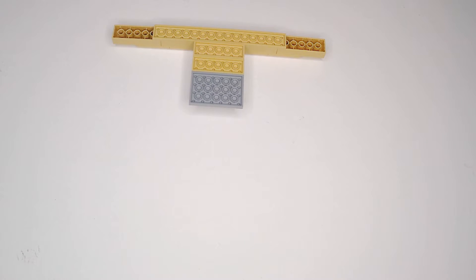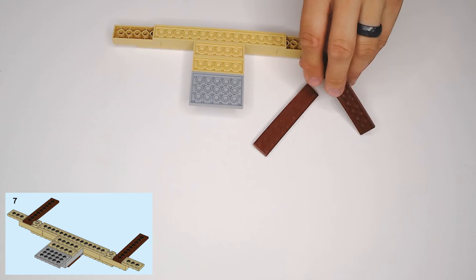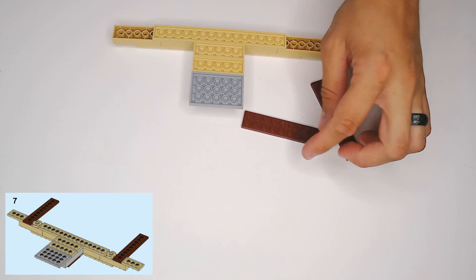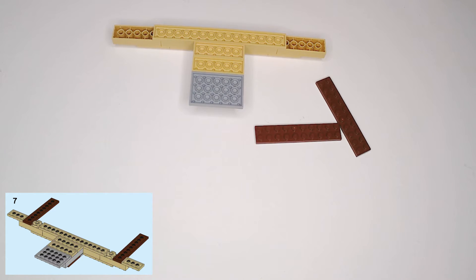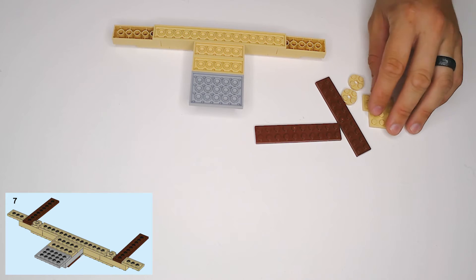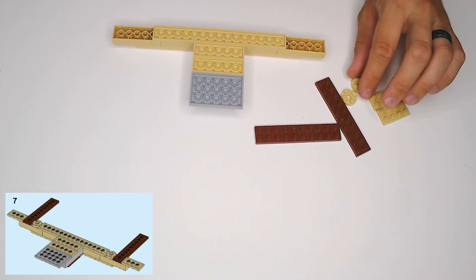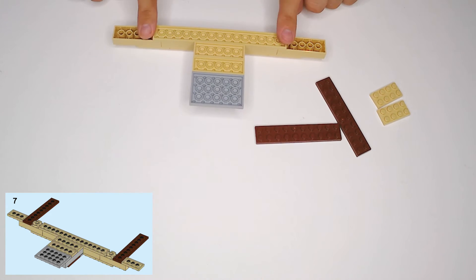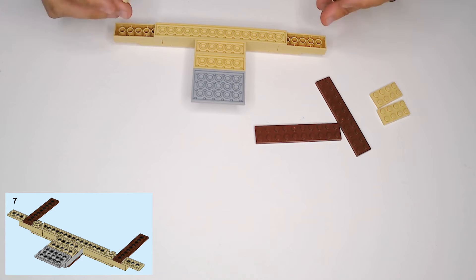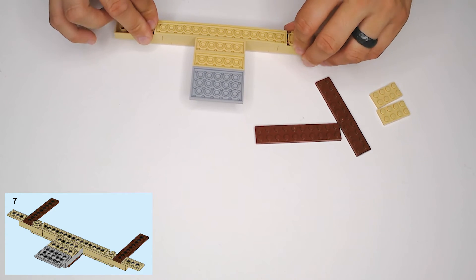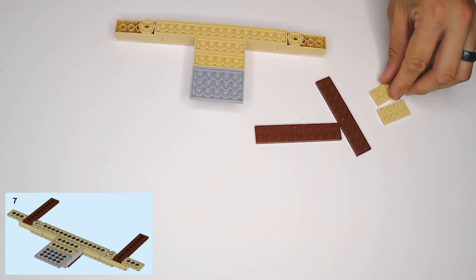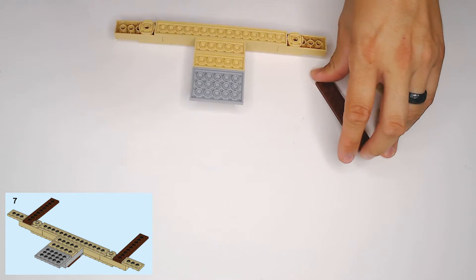In step seven, we need two of these brown 2x10s, and we need two round 2x2 plates in tan, and then two 2x4 plates in tan, and let's do the round plates first. The round plates are going to go on the ends of our tee, like this, right off the ends of that super long, that 2x16 plate that we put on first.